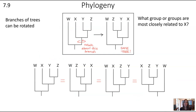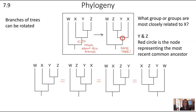An important thing to notice is that the branches of trees can be rotated. It's easier to think about these as 3D structures that we're just capturing a temporary 2D version of — all branches can spin on the nodes. If we spun the phylogenetic tree shown on the upper left, we'd end up with exactly the same relationships between groupings, just visualized differently. To practice: the groups most closely related to X are both Y and Z — go back to the most recent divergence node, then follow that branch up the other path.